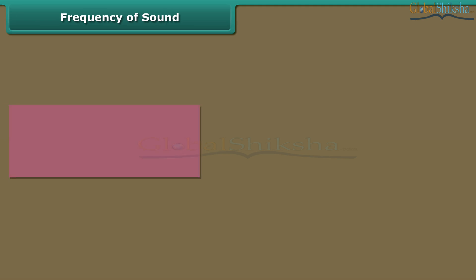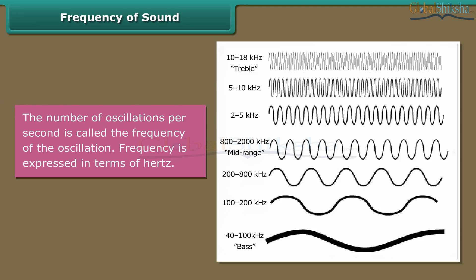Frequency of sound: The number of oscillations per second is called the frequency of the oscillation. Frequency is expressed in terms of hertz.